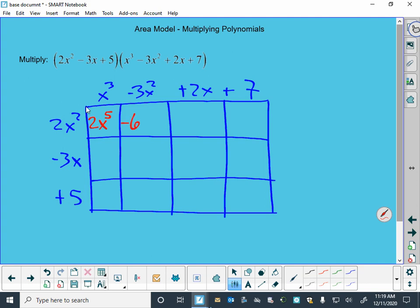x² times x is x³. Two times seven is 14, and we got an x² from the left there on our next row.